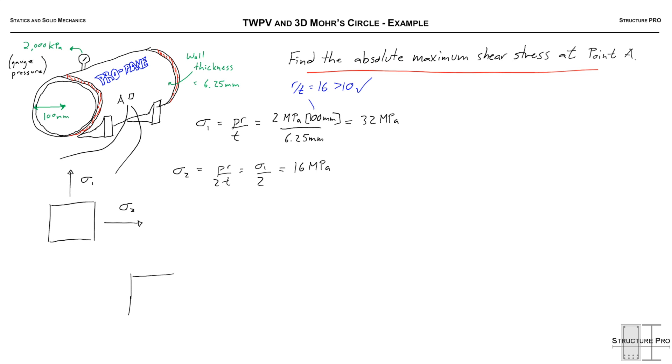That was pretty quick, but let's draw this out in 3D. We know that there is actually a third dimension. In fact, we know that the third dimension of stress is equal to P on the inside of the pressure vessel and equal to 0 on the outside.